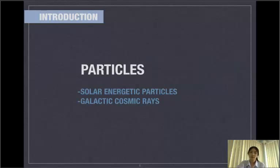Particles. The particles that come to Earth originate at the Sun and other parts of the galaxy. The particles from the Sun are called solar energetic particles and the particles from other parts of the galaxy are called galactic cosmic rays.